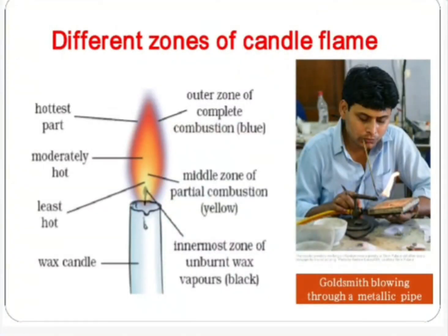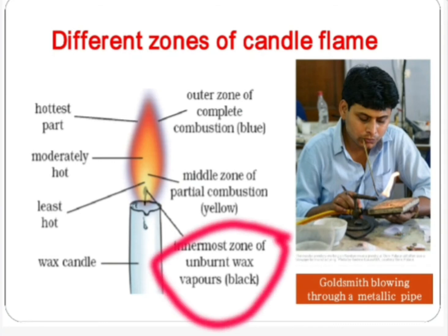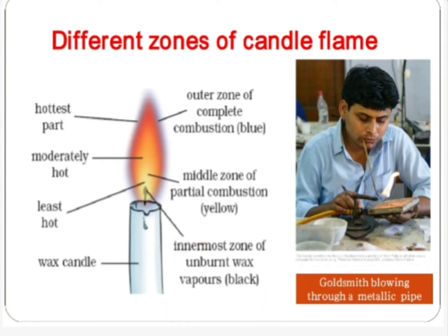Next point is different zones of a candle flame. There are three zones in a candle flame. First, the innermost zone. It is the black portion of the flame surrounding the wick of the candle. Here the carbon particles do not undergo any combustion due to the absence of oxygen. It is the coolest of the three zones as no combustion takes place here.